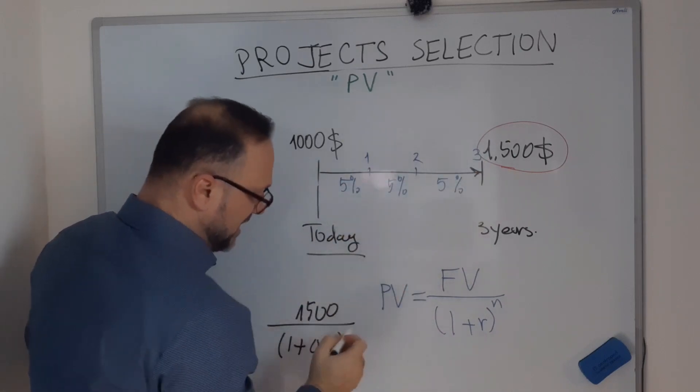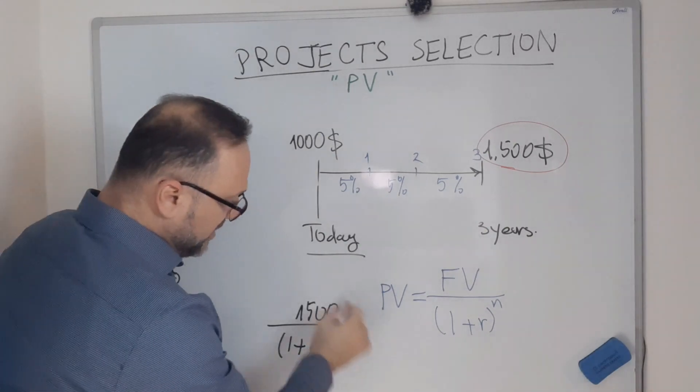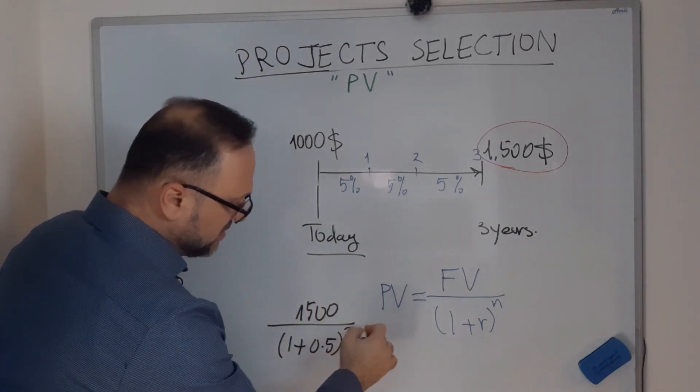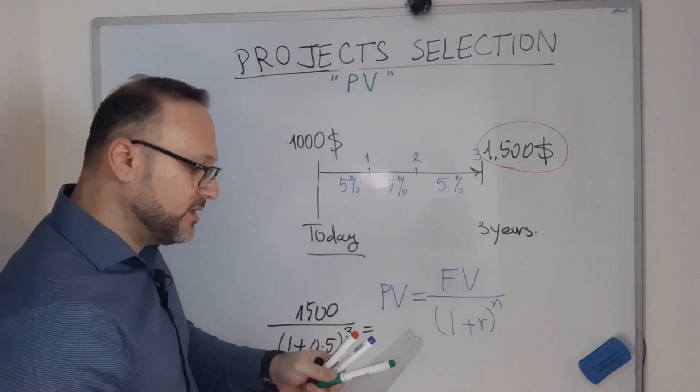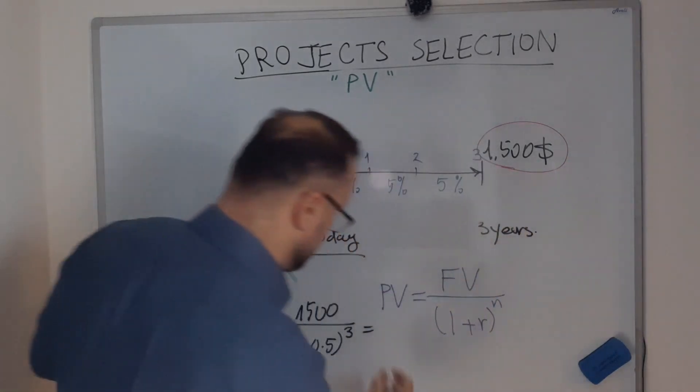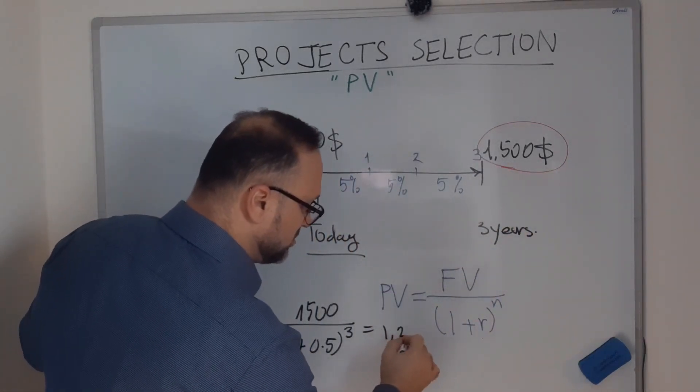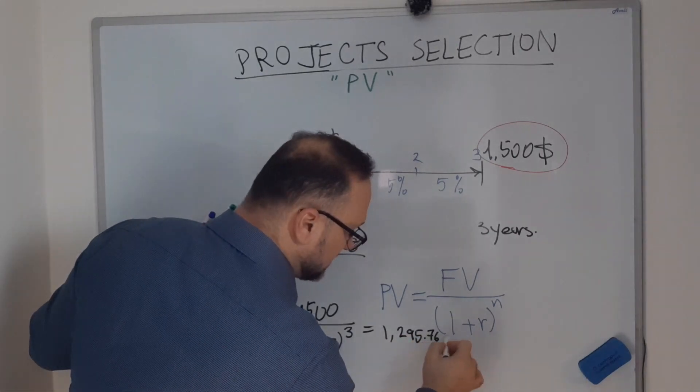To the power of n, and n is the number of the period, the number of time which is 3. With this simple calculation, that will bring me here $1,295.76.